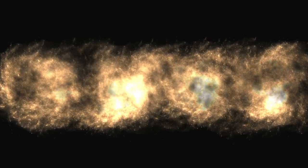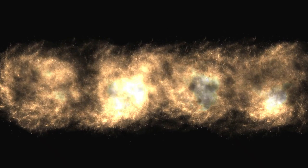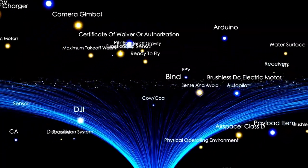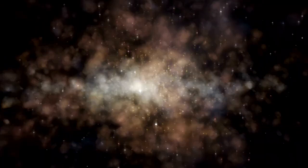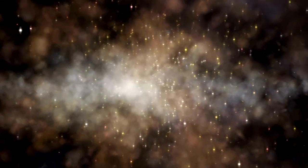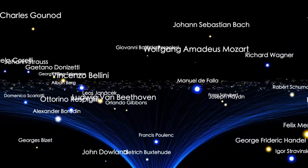Scientists estimate that the diameter of the observable universe is about 93 billion light years. That may seem surprising when compared to the estimated age of the universe, which is around 13.8 billion years. One might wonder how the observable universe can be larger than the age of the universe in light years. The answer lies in the fact that the universe has been expanding ever since the Big Bang.